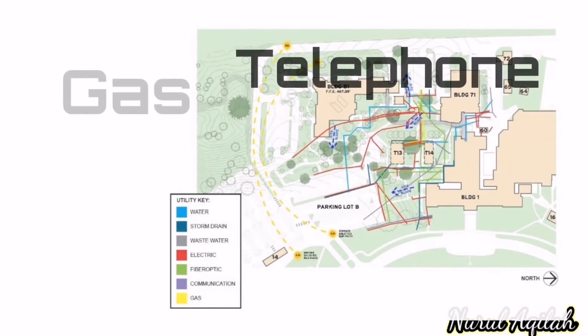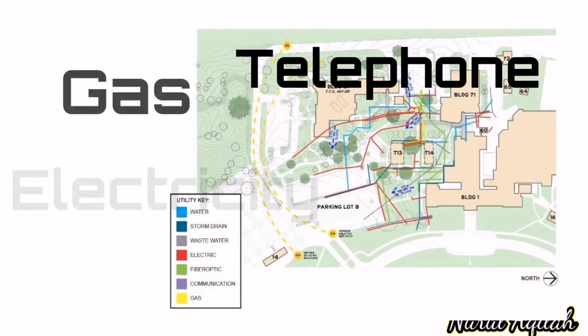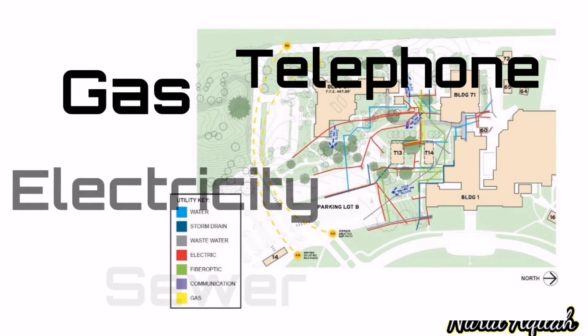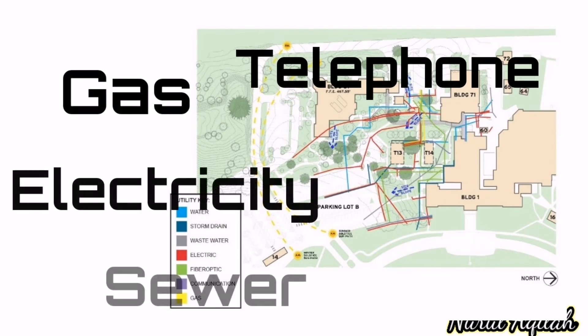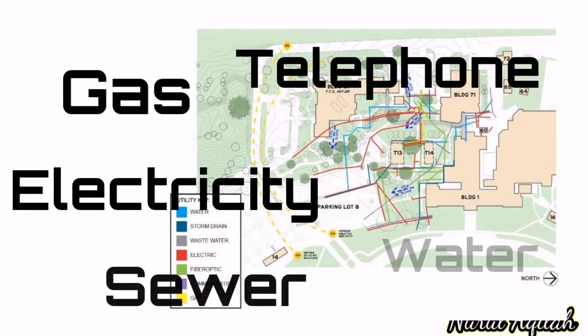Utilities is an organization of supplying the community with basic necessities. In this topic, you need to study the nearest point of each supply so that you can design accordingly.